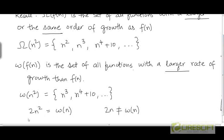Here are a couple more examples. The function 2n-square is present in the set little omega of n, because this function grows at a rate faster than the rate of growth of n. The function 2n does not belong to the set little omega of n, because the function 2n grows at the same rate as n.